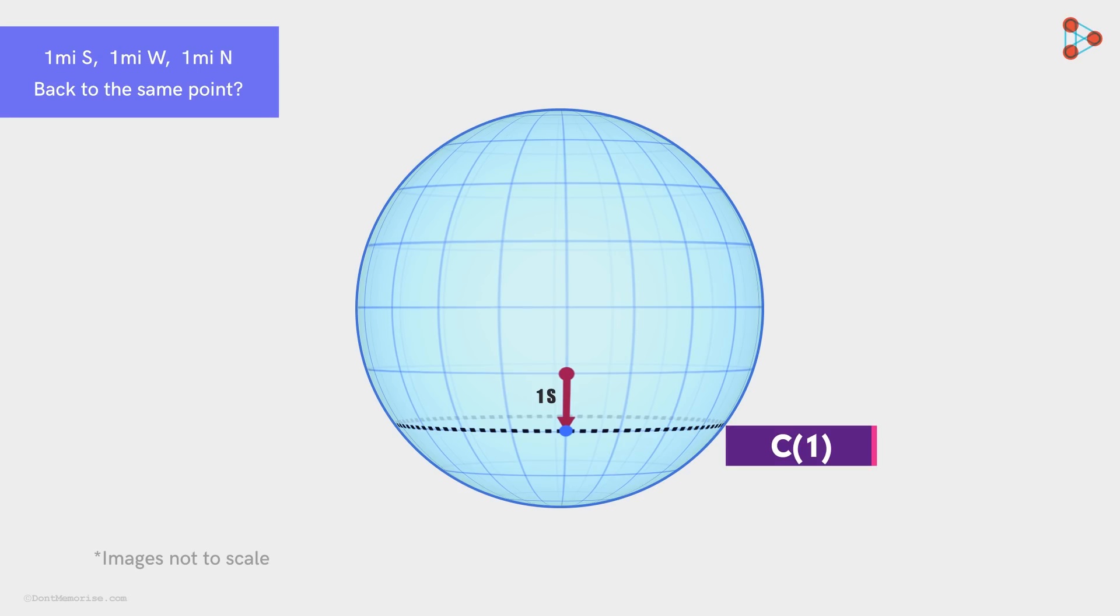And when we travel one mile west, we complete a loop on this circle and reach the same point on the circle where we started from. And finally, when we move back one mile north, we end up at the same point where we began our journey from.